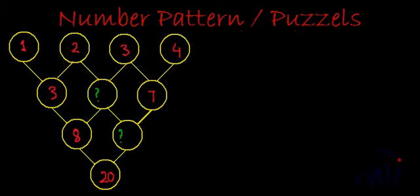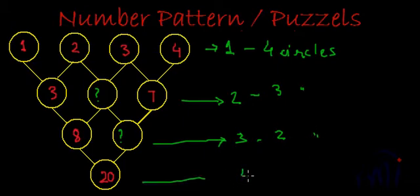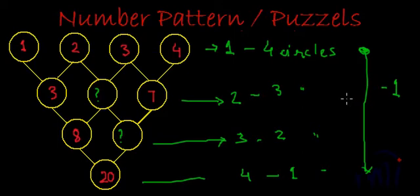In the first row, if we call this as row number one, here we have four circles. In the row number two, we have three circles. And then we have two circles in row number three. And in the last which is row number four, we have only one circle. First row we are starting with four circles but as we are going down, number of circles are reducing by one, every time.